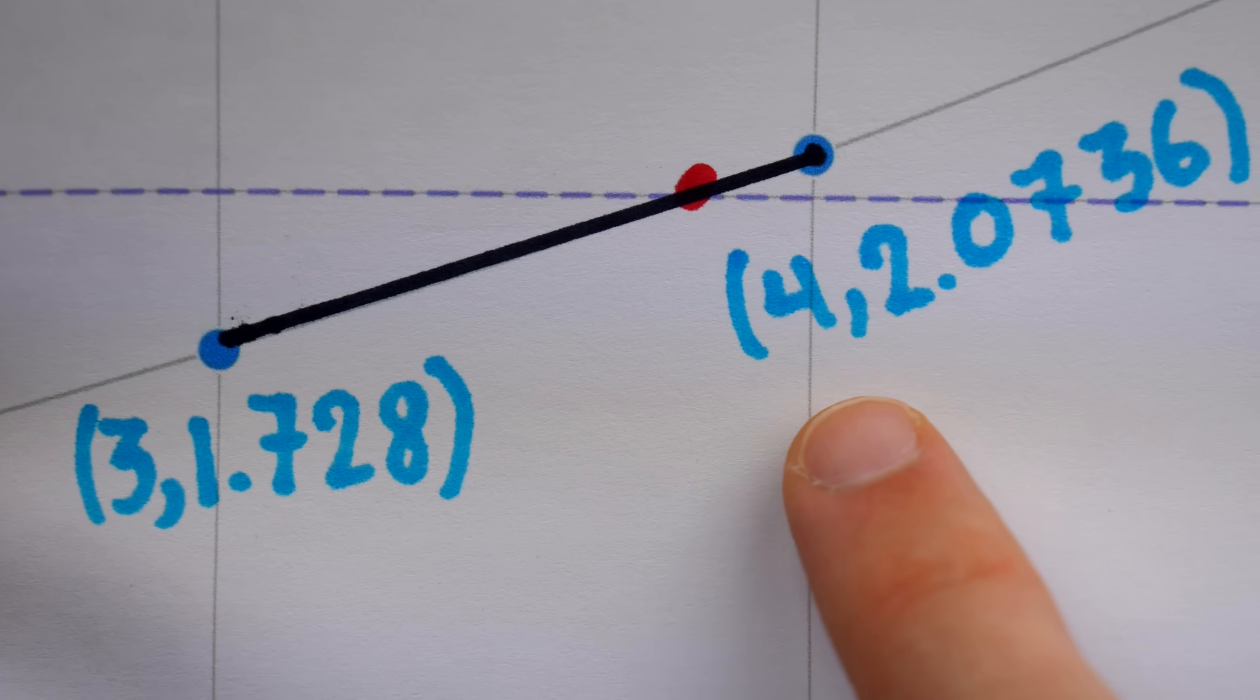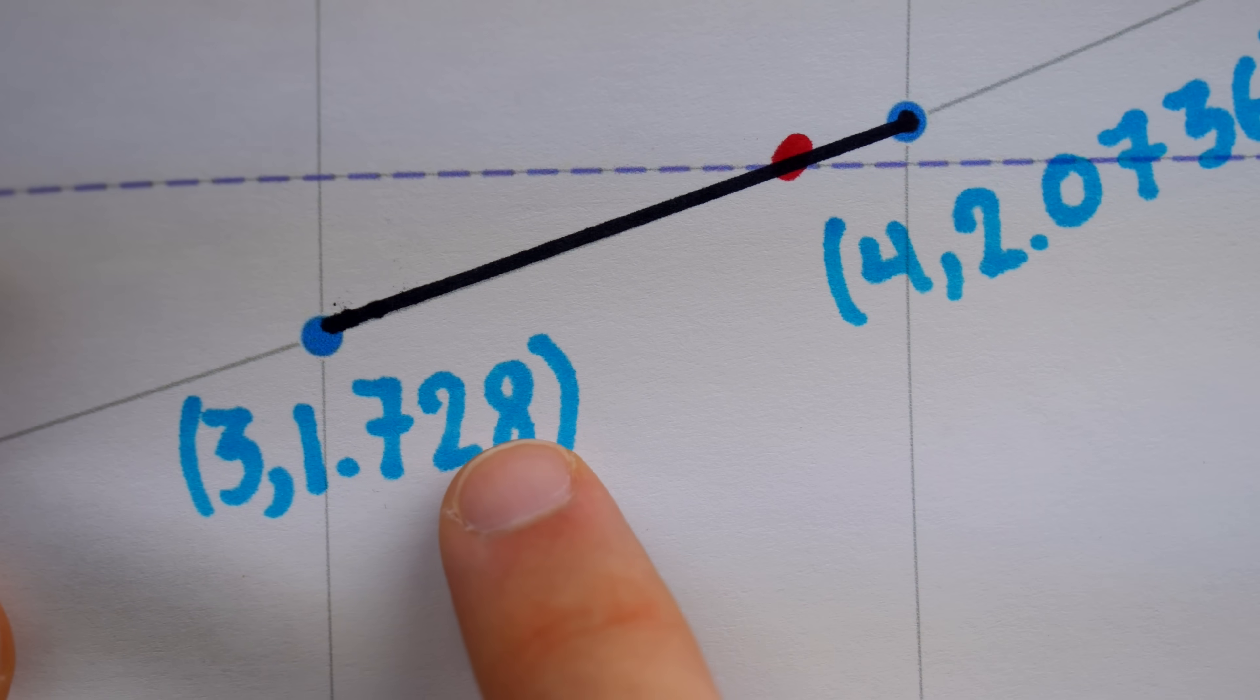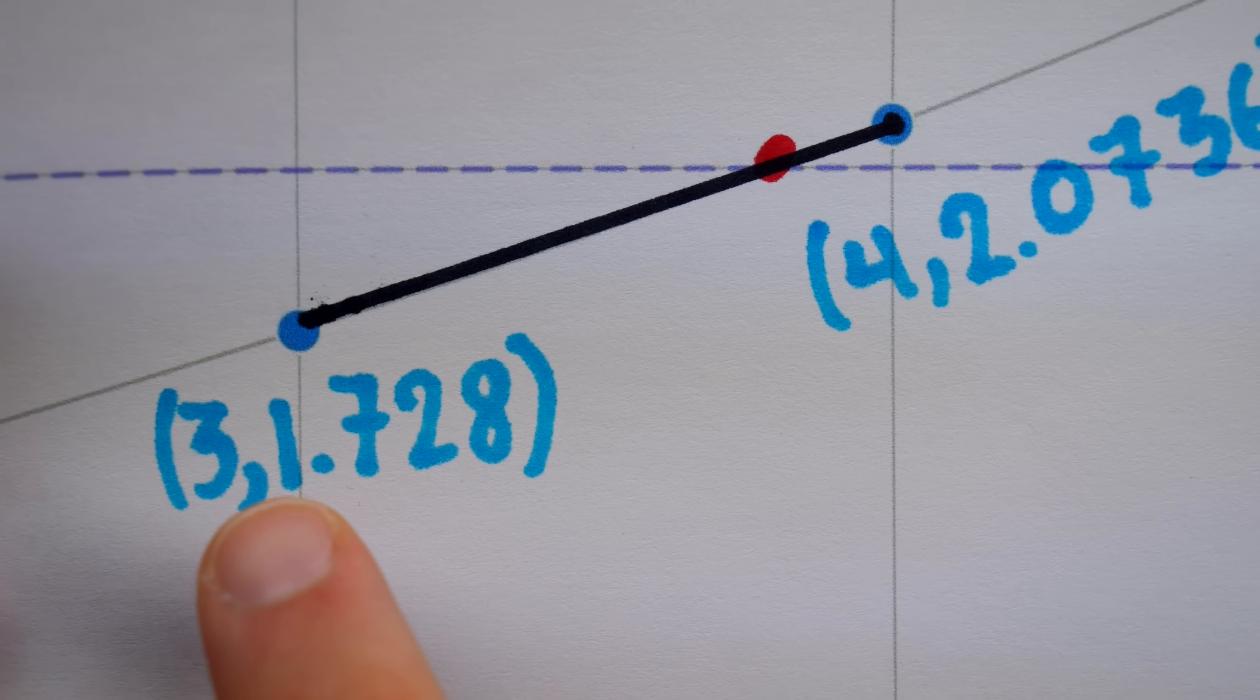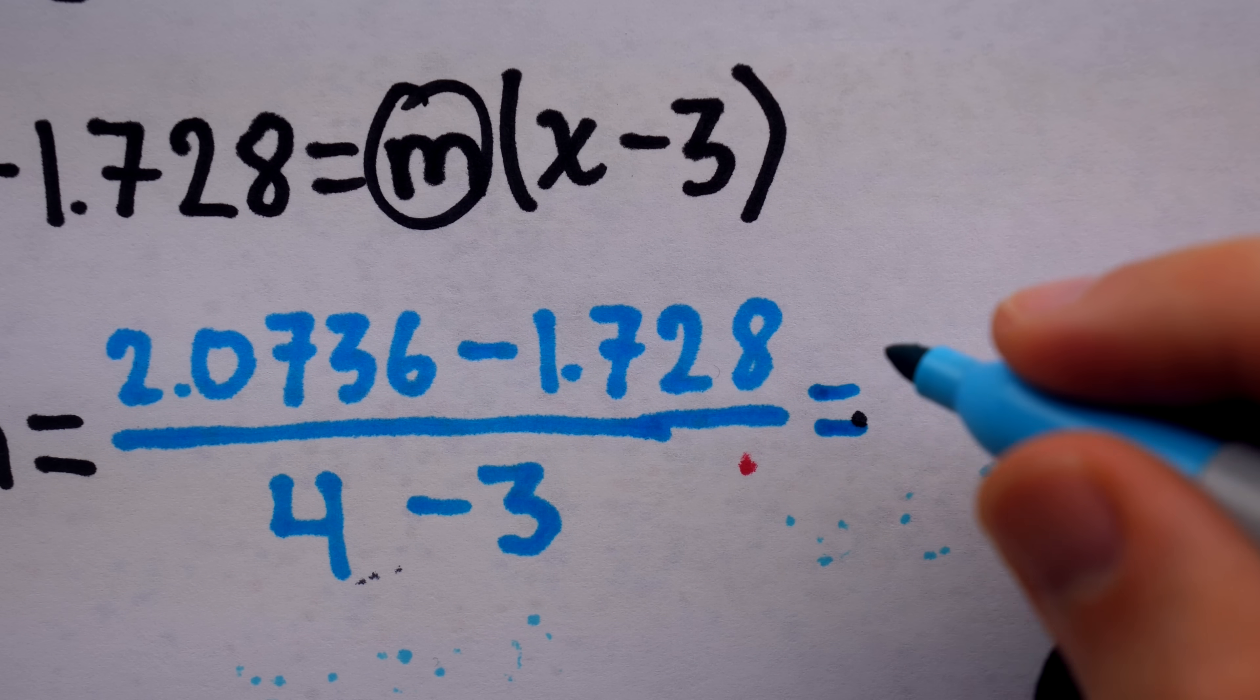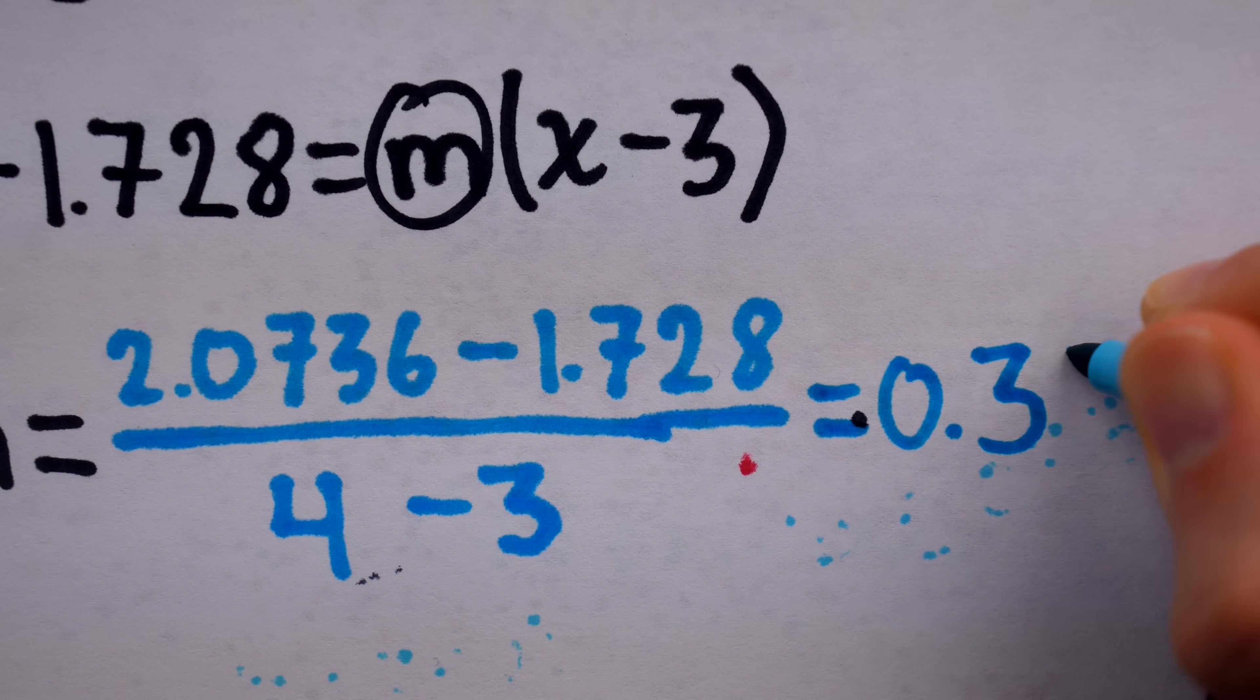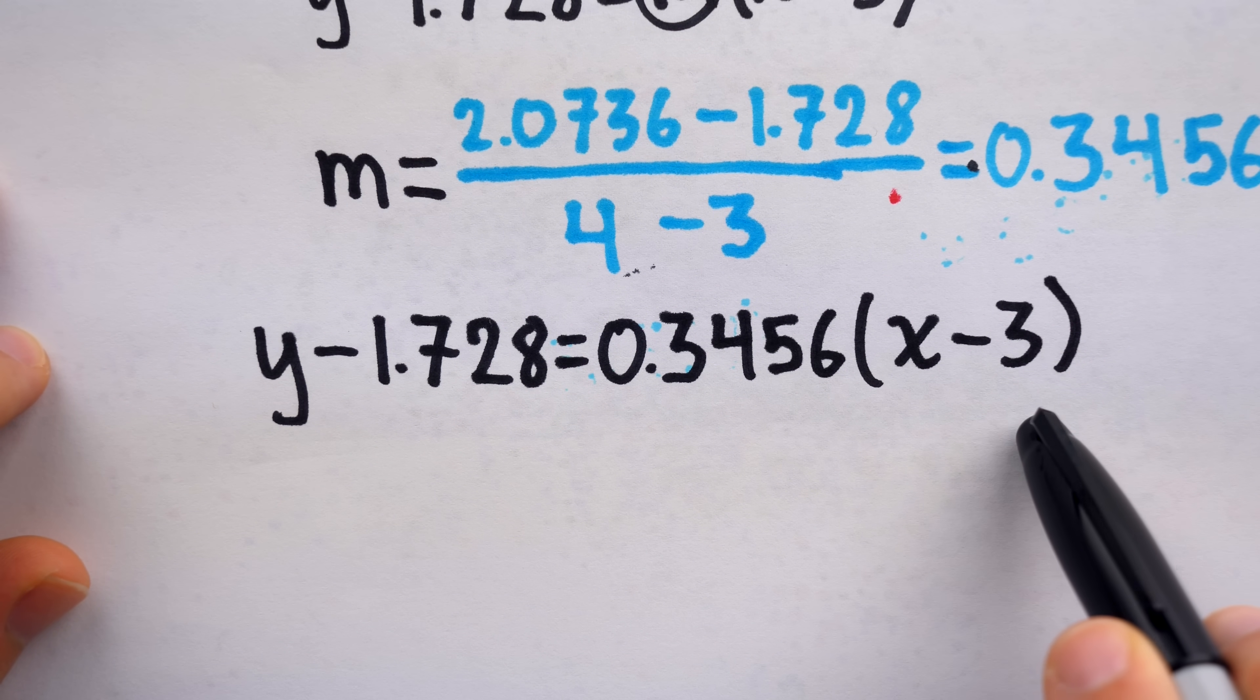The slope of the line is rise over run. So this minus this divided by this minus this. So this is that familiar slope formula. And this comes up to a slope of 0.3456. So the linear interpolation gives us this line.